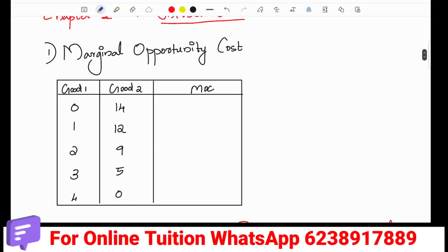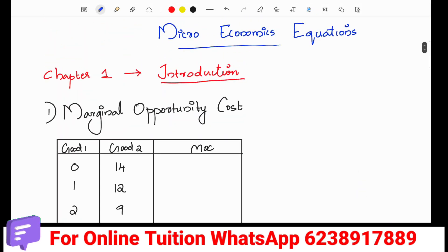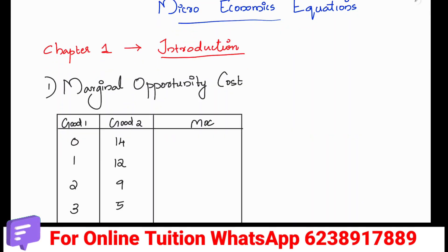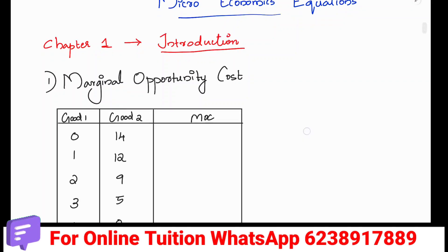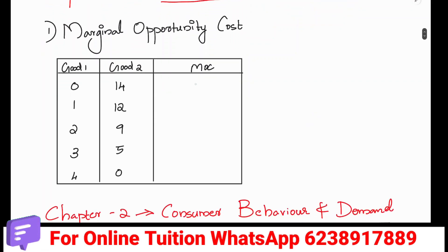We are going to talk about marginal opportunity cost. If you think about the marginal opportunity cost, we are going to sacrifice two goods. It is really a simple start at that.